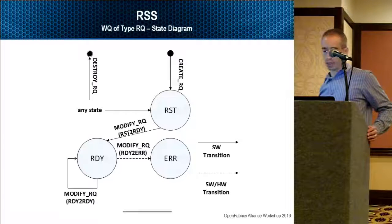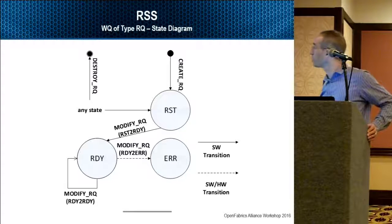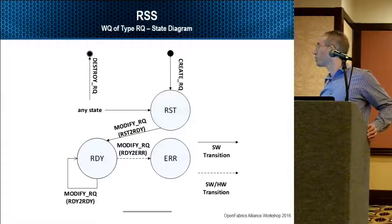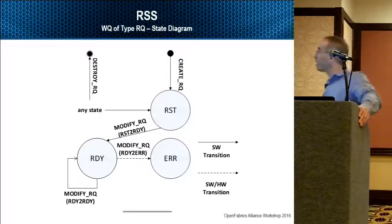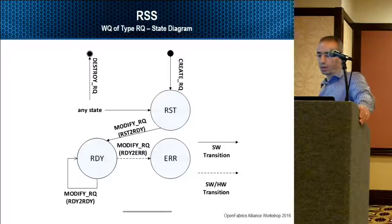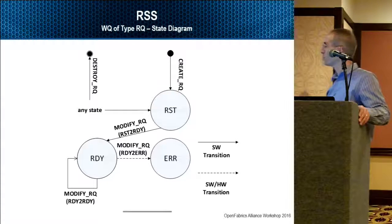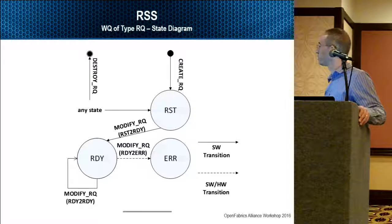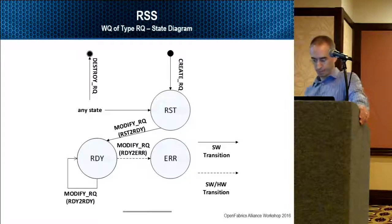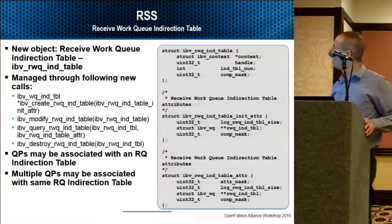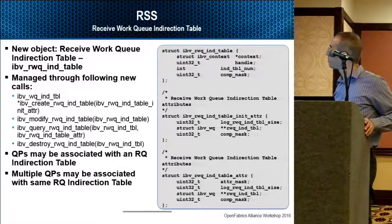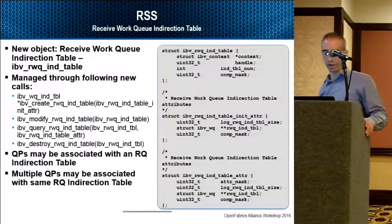This shows the state diagram of a work queue of type receive queue. We are familiar with the state diagram of the QP, but for the receive work queue we have a much simpler state diagram: a reset state which is the initial state where the user can post receive buffers and prepare the work queue before it is put into use; a ready state where the receive queue is ready to process incoming traffic; and an error state for when a user would like to destroy and deallocate his buffers. The indirection table is a new structure that can be associated with the receive queue, with methods to create, modify, query, and destroy it.